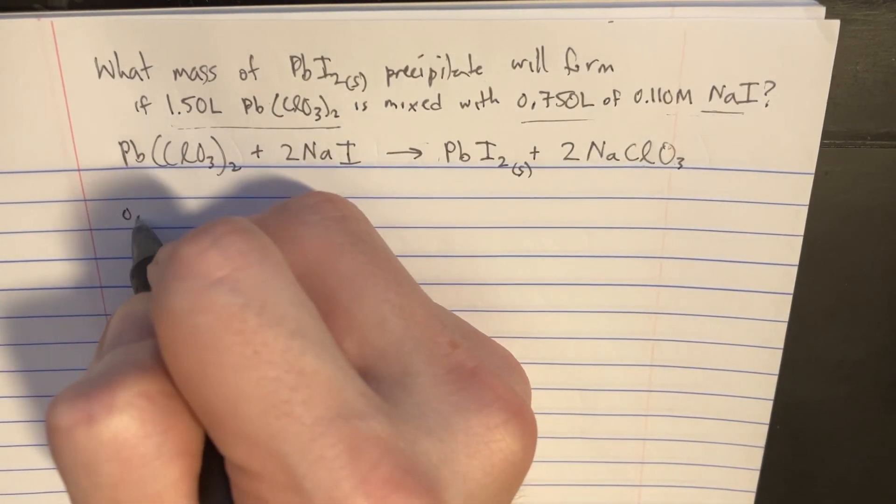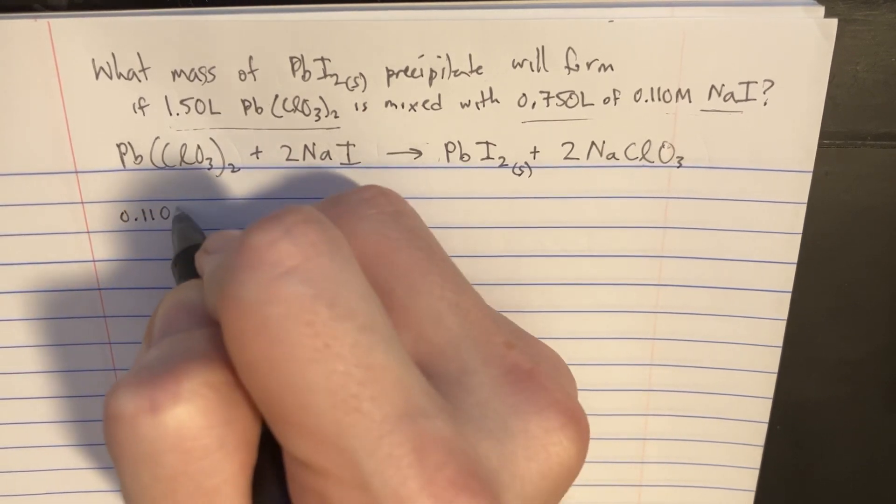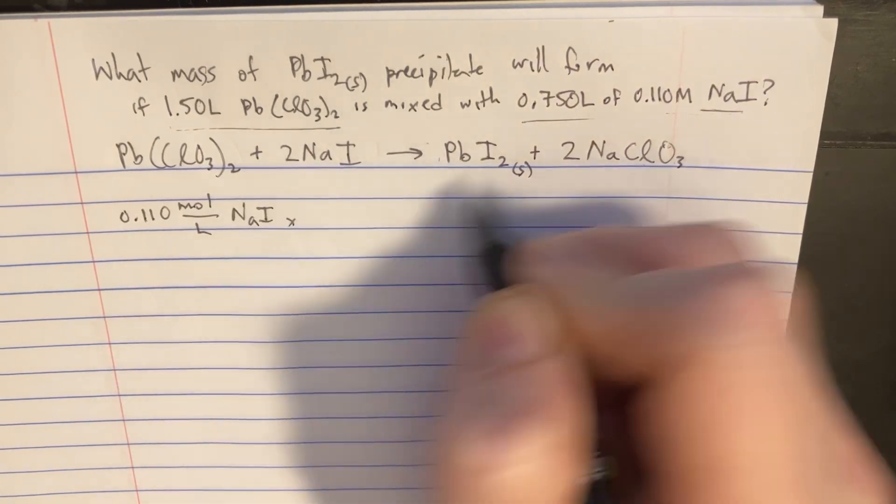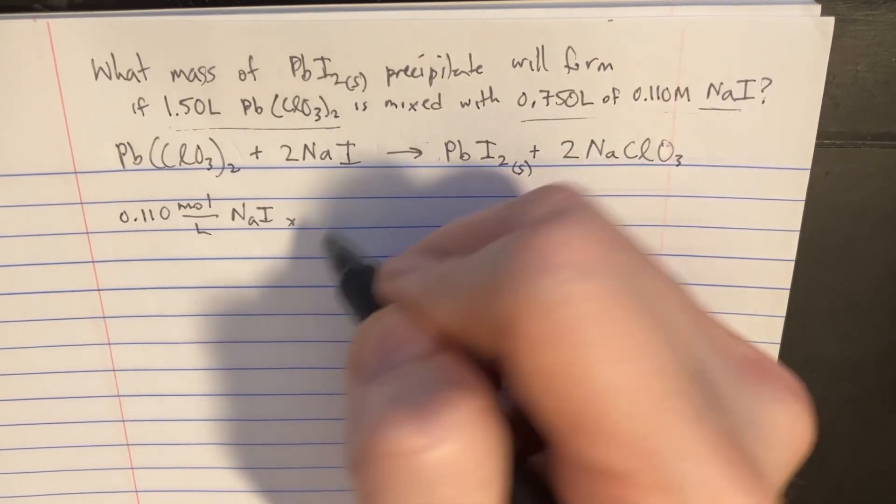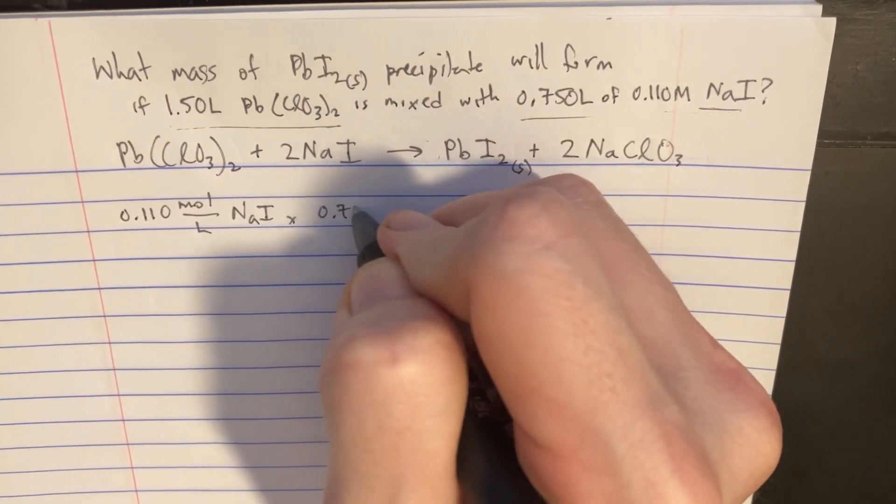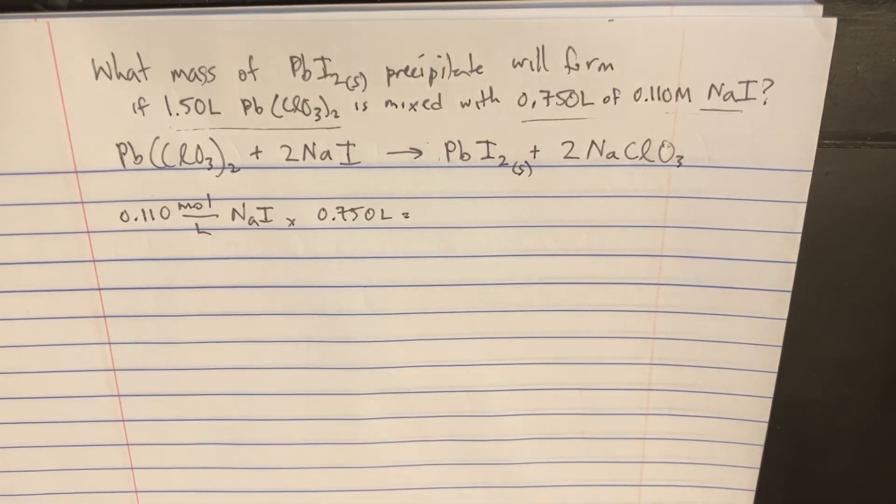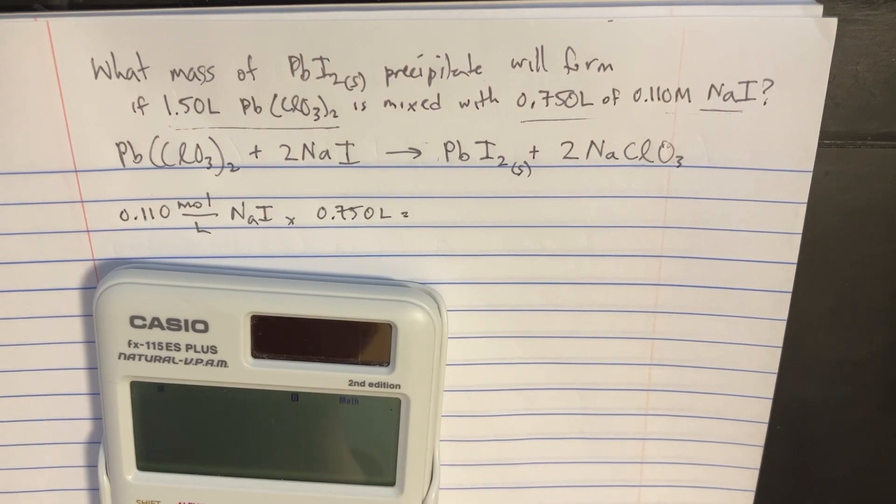We have 0.110 mole per liter of NaI, and we're going to multiply that by the liters so that we can figure out how many moles of that we have, 0.750 liters. So we should be able to figure out how many moles of NaI are being reacted.